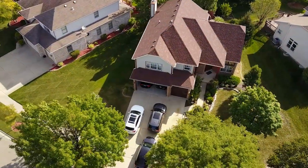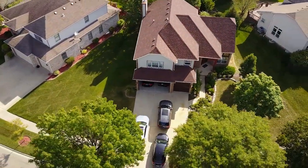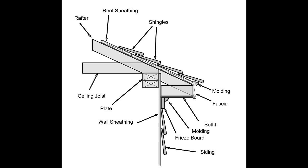First, let's understand what a soffit is and what it does for a home. The soffit is part of the overhang where your roof meets the siding — underneath the overhang between the roof's edge and the side of your home. It is used to ventilate the attic and prevent your rafters from rotting. The soffit is also used for the roofing fascia, which plays an equally important role in preventing roof and attic damage due to moisture.